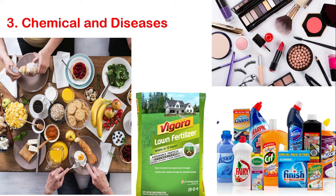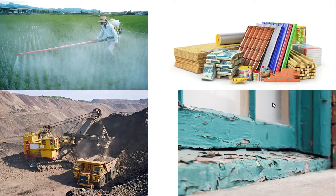Number three: chemical and disease. You see, chemicals are everywhere. They can be found in the food that you eat, in fertilizer, in cosmetics, in cleaning products, and pesticides or building products. They can also come from mining.